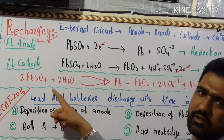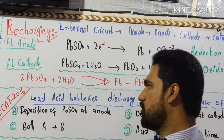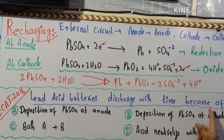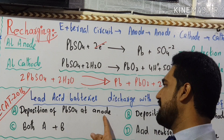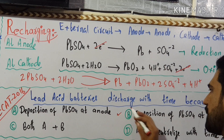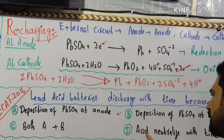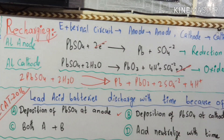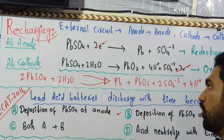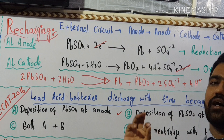In the ECAT engineering quality admission test in 2016, an MCQ asked: why does an ACER battery discharge with time? Option A: deposition of lead sulfate on the electrode surface at the anode. Option B: acid neutralized with time. The correct answer is B — acid is neutralized with time, which is why the battery discharges.